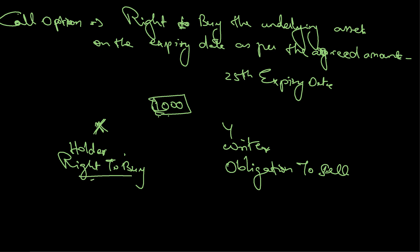Rights don't come free of charge. The writer is taking all the risk through his obligation to sell. So as soon as the holder enters into the contract, he is supposed to pay an amount to Y — technically called the premium.